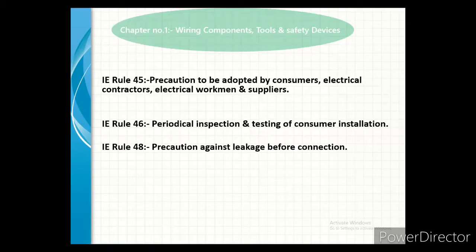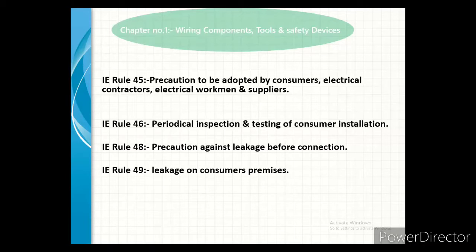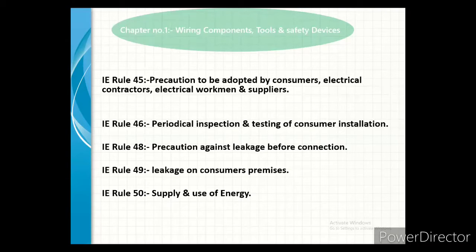Next, Indian Electricity Rules 48, precaution against leakage before connection. This rule tells us that when connecting a new connection, you must check for any leakage. Our next rule is Rule number 49, leakage on consumer premises — you check for any leakage in consumer premises after connection or after installation of the electrical system. You also check the proper supply at consumer premises and install an energy meter for counting energy usage.